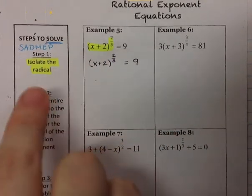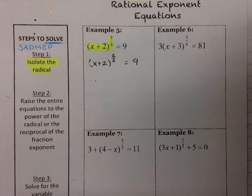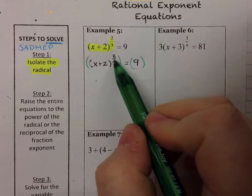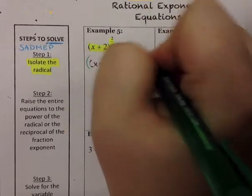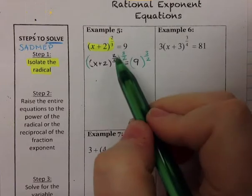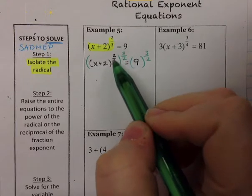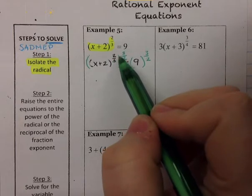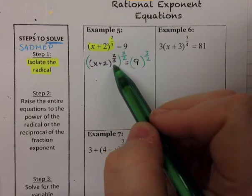Now that step 1 is done, we go to step 2. We don't have the radical itself, so we raise it to the reciprocal of the fraction exponent. I take both sides of the equation and raise to the reciprocal of 2/3, which is 3/2. On the left, the exponents multiply: 2/3 times 3/2 gives us 1 — that's why we do this. Remember, this would have been the cubed root of this squared; the fraction exponent is just a radical written differently.